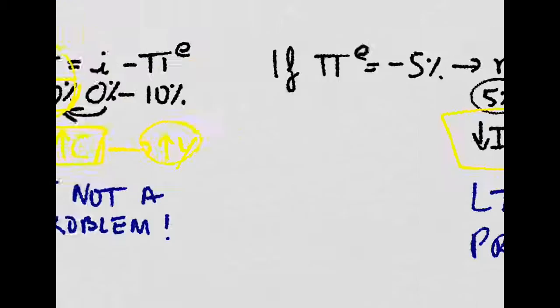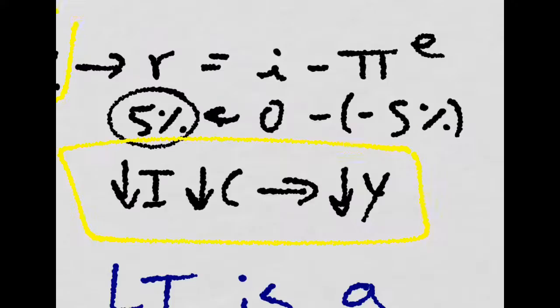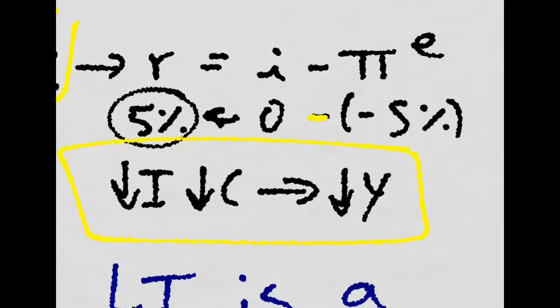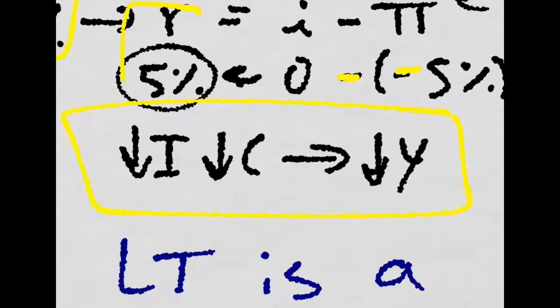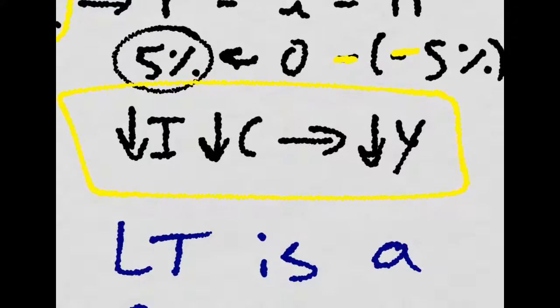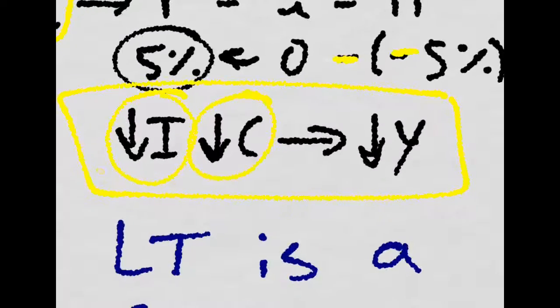The problem is when we have deflationary expectations, people expect prices to go down. And then here we have minus minus 5, which is plus 5, and then we have a positive real interest rate, and that means that investment will go down and consumption will go down because they will just invest in bonds.